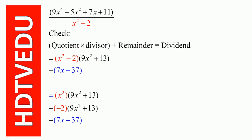Now let us check if our answer is correct. Quotient times divisor plus remainder equals dividend. Quotient is 9x squared plus 13, divisor is x squared minus 2, remainder is 7x plus 37. So we expand: x squared minus 2 times 9x squared plus 13 equals x squared times 9x squared plus 13, plus negative 2 times 9x squared plus 13, then we add the remainder.